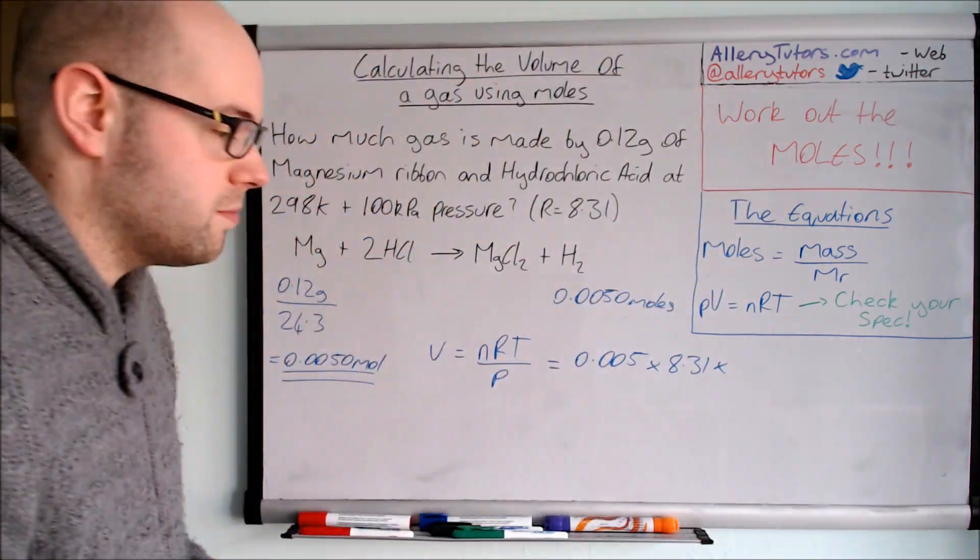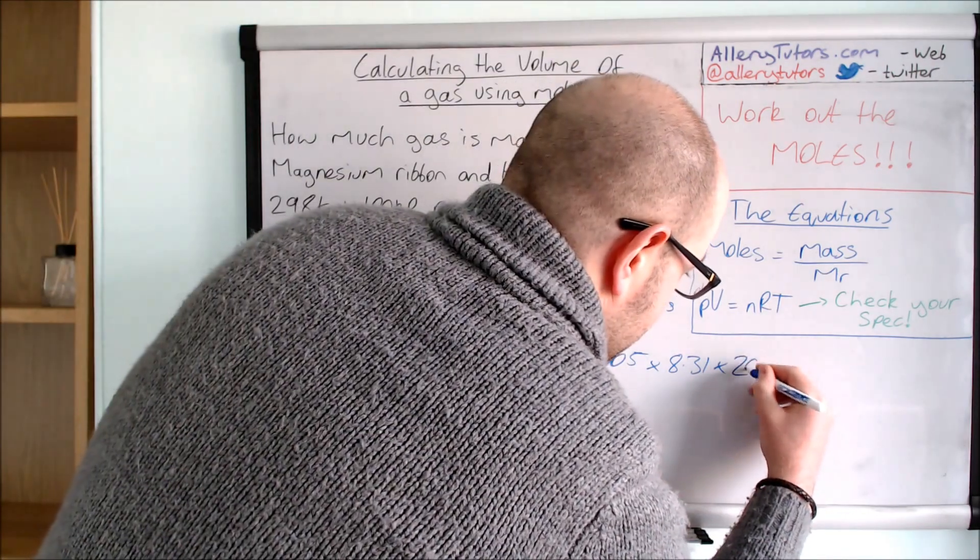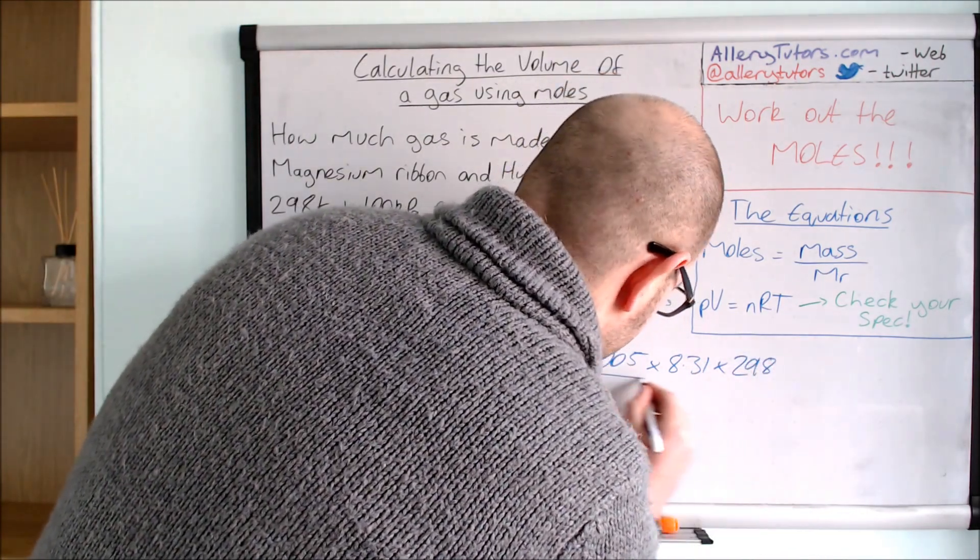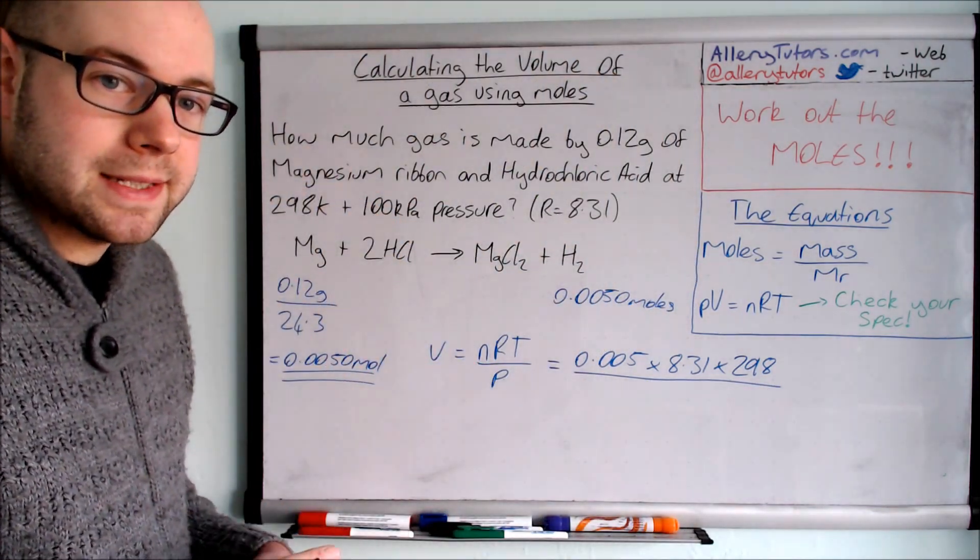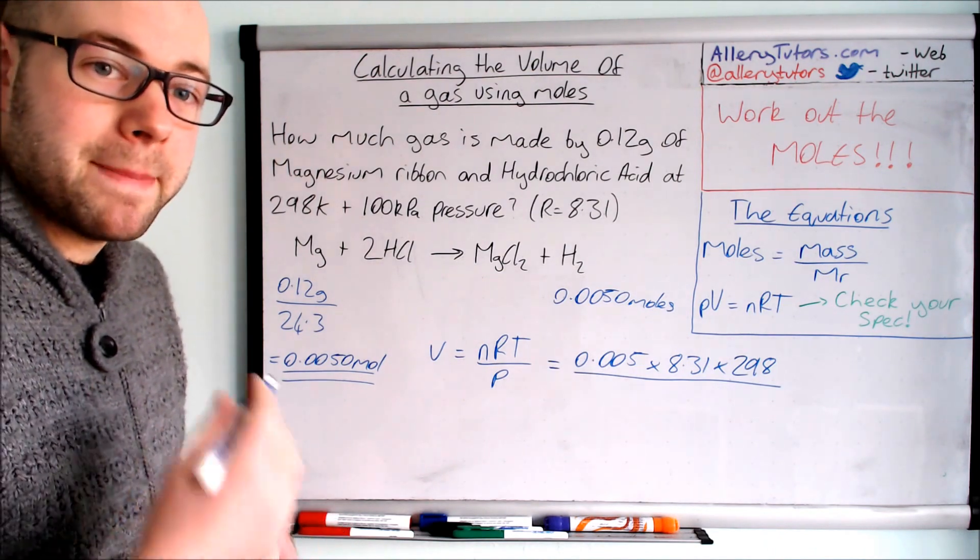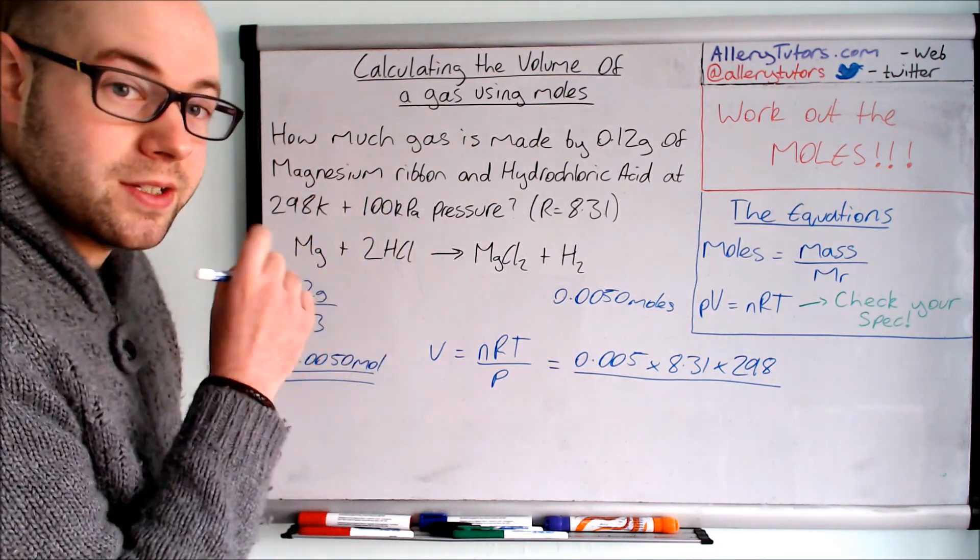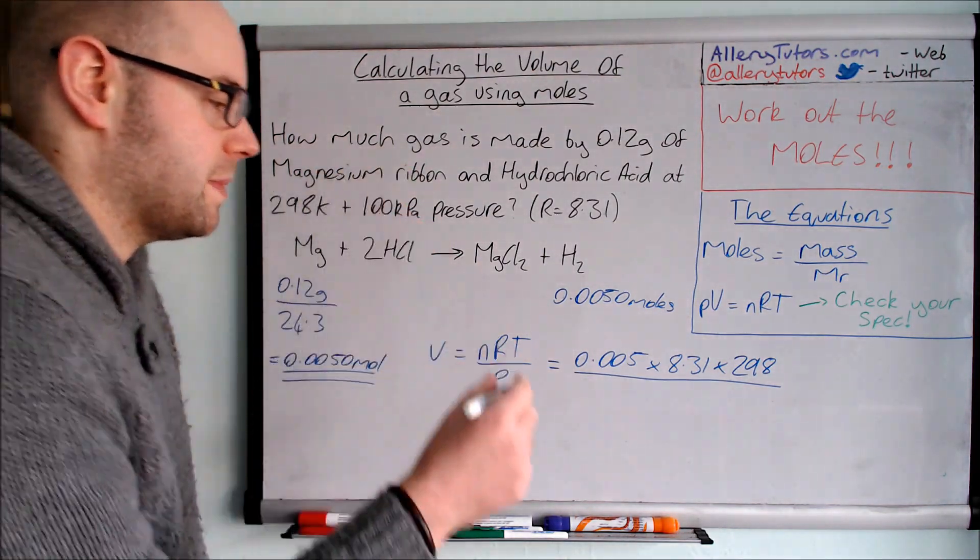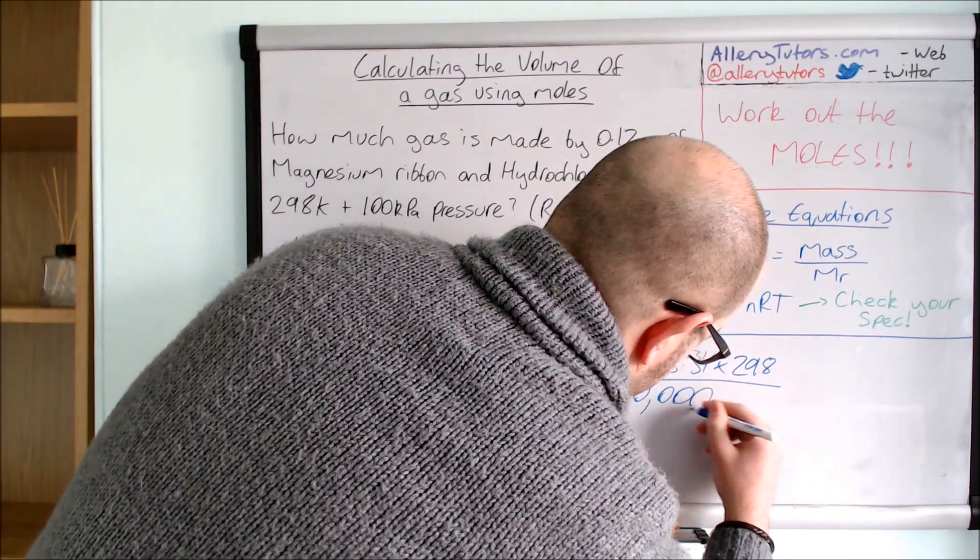And we're going to multiply that by the temperature. This is at room temperature so it's 298 Kelvin. And we're going to divide all that by the pressure. Now our pressure is in 100 kilopascals. According to the ideal gas equation it must be in pascals. So we need to multiply this by 1000 to turn it to pascals. That's really important. Make sure you convert that to pascals. So that's 100,000 pascals.